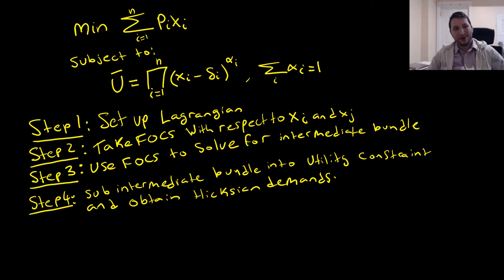Hey guys, what's up? Welcome to this video where we're going to solve for an N-good system where our preferences are Stone-Gary. We're looking for our Hicksian demands in this case of cost minimization.